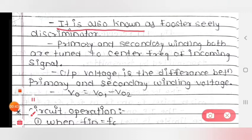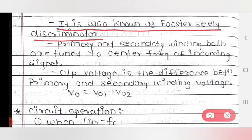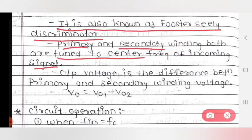First point: it is also known as Foster-Seeley discriminator. Second point: primary and secondary windings both are tuned to the center frequency of the incoming signal.